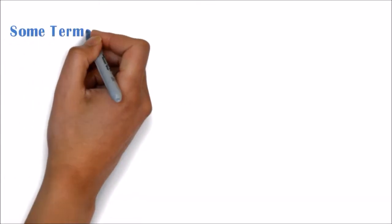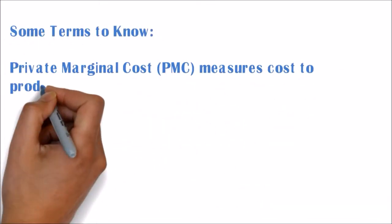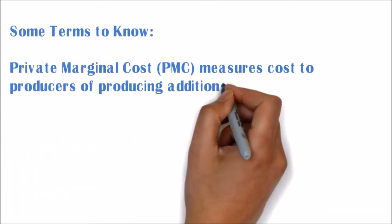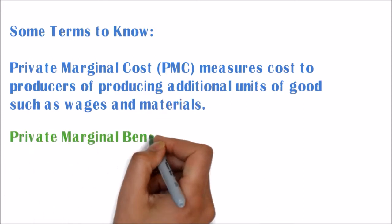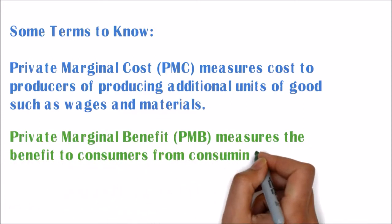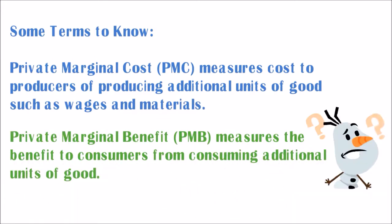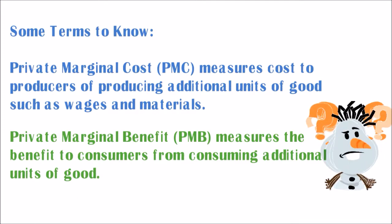Some terms to know. Private Marginal Cost, PMC, measures the cost to producers of producing additional units of goods, such as wages and materials. Private Marginal Benefit, PMB, measures the benefit to consumers from consuming additional units of goods.